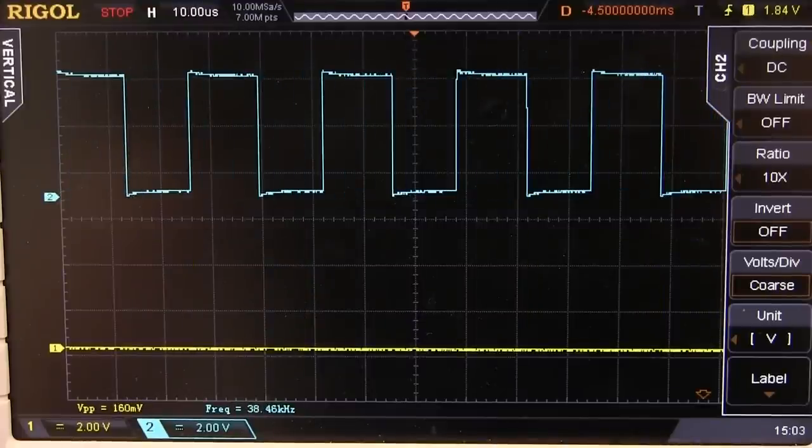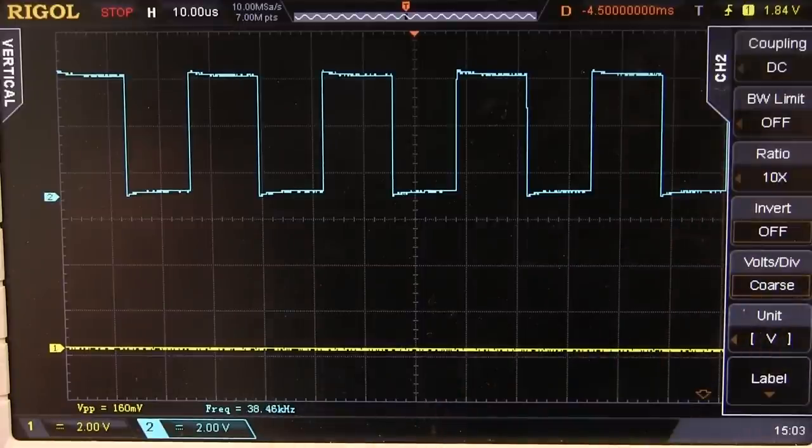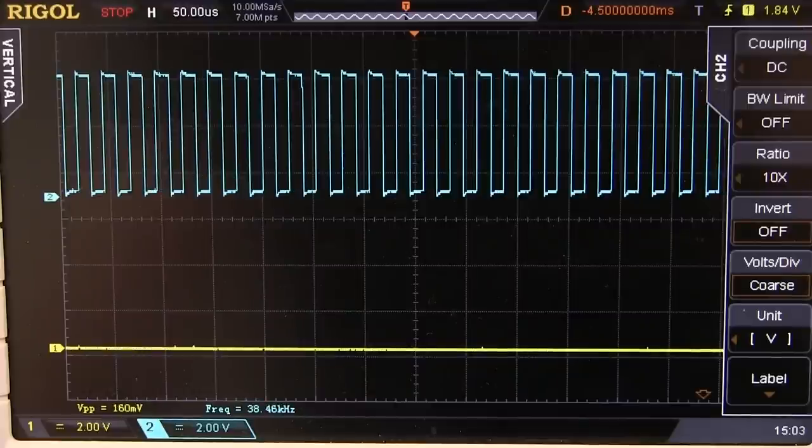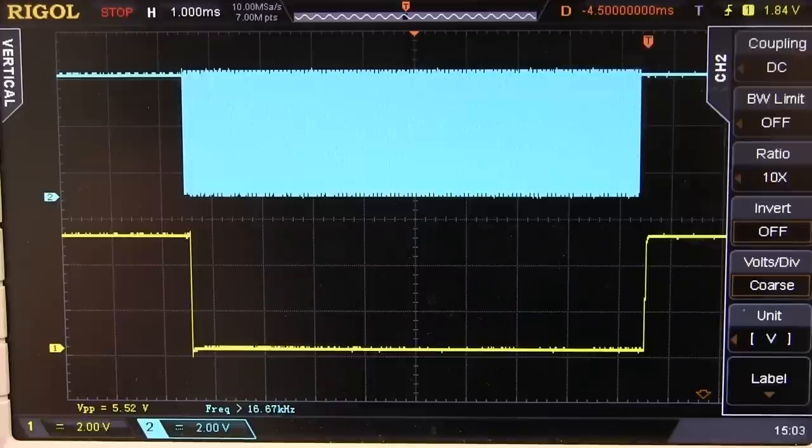There's our carrier frequency. And if we check out our frequency down here, it's decoded that, there you go, 38.4 kilohertz. It's going to vary, it's not going to be spot on, but it's roughly that 38 kilohertz carrier frequency.